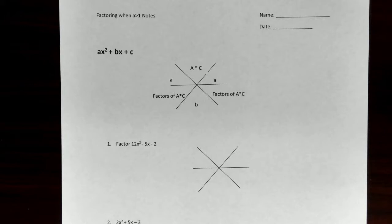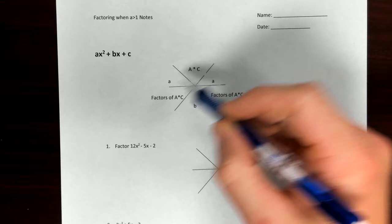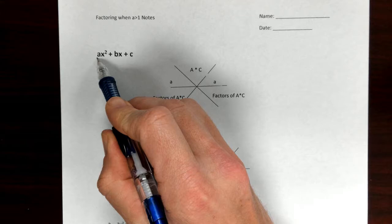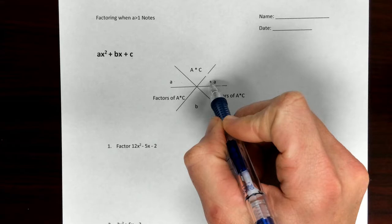All right, everybody — the long-awaited asterisk method. So what you're going to do is you're going to have a standard form: ax squared plus bx plus c. You're going to draw your little asterisk. In the top, you're putting a times c, which is the number in front of your x squared times the number at the end. Down here, you're putting b, the term in front of the x.